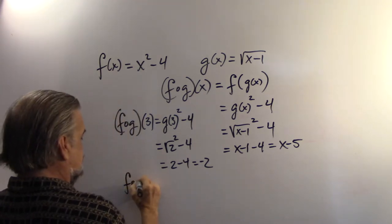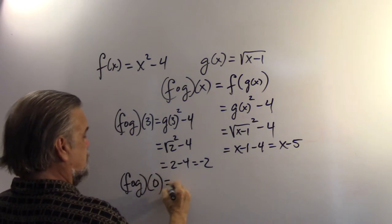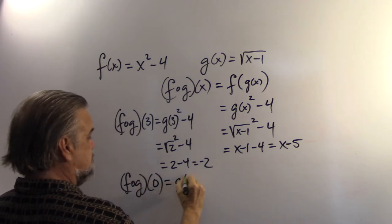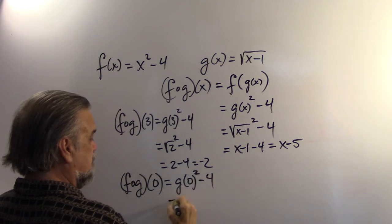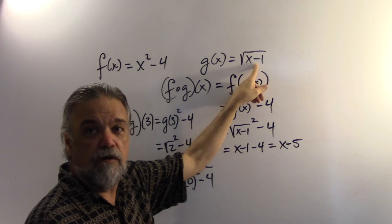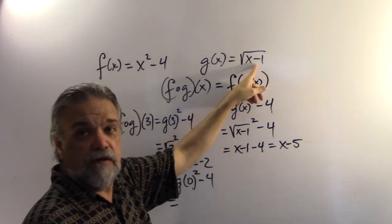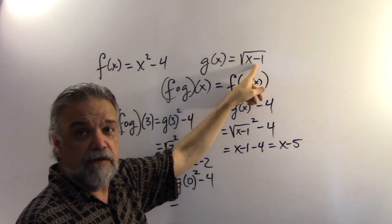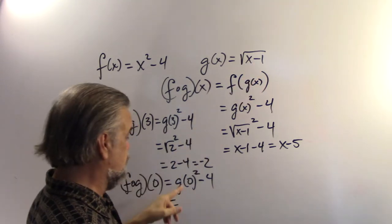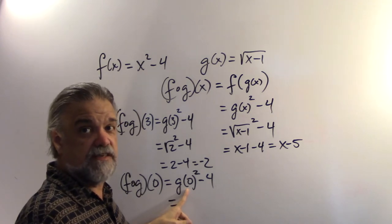What if we take f of g of 0? That's going to be g of 0 squared minus 4. And g of 0 is the square root of 0 minus what—oh problem. 0 is not in the domain of g of x. So we can't evaluate that and then square it and then subtract 4. It doesn't exist.